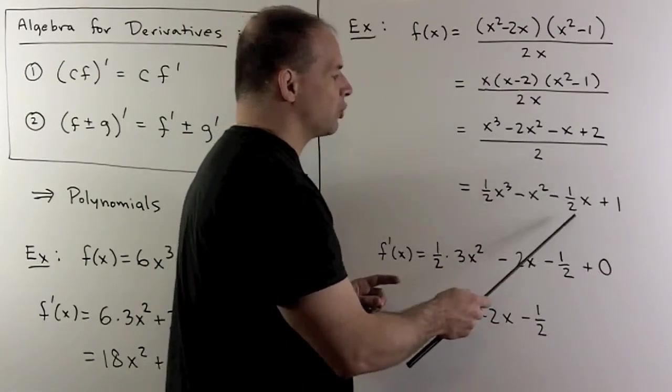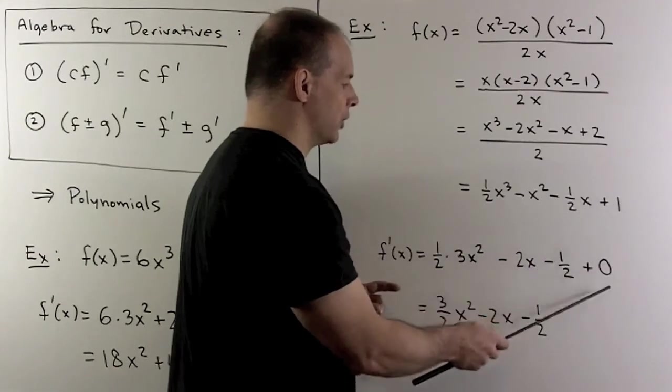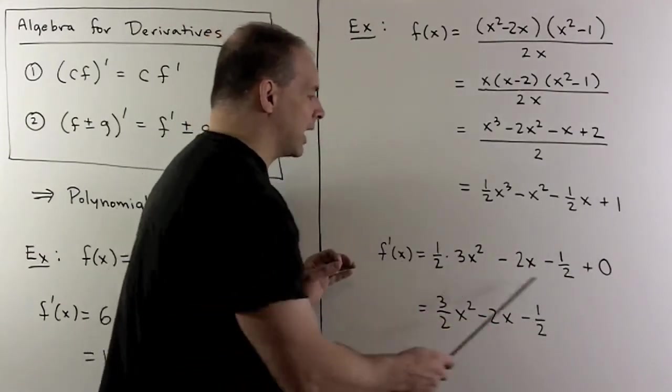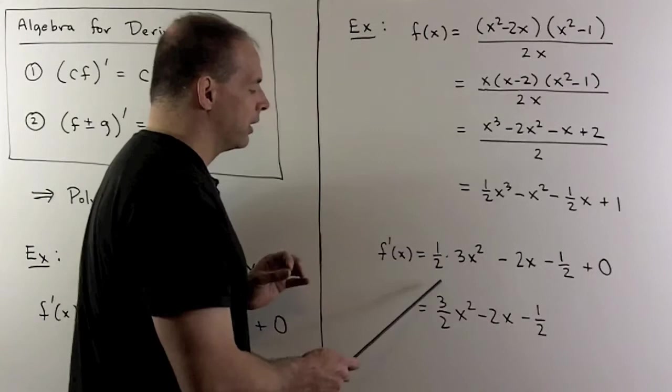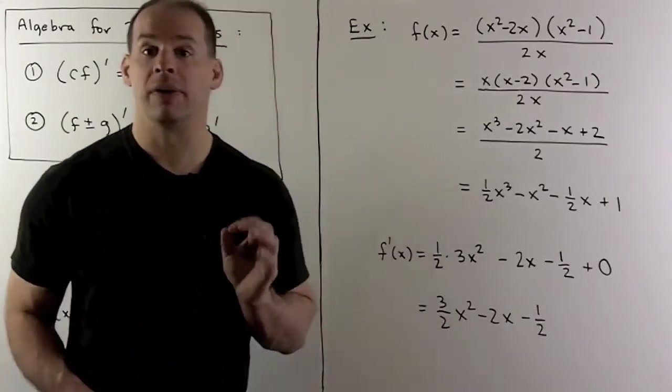The minus 1 half x, just remember, the x goes to a 1. And then, the constant term 1 is going to go to 0. We collect everything. And then, we're left with 3 halves x squared minus 2x minus 1 half for our final answer.